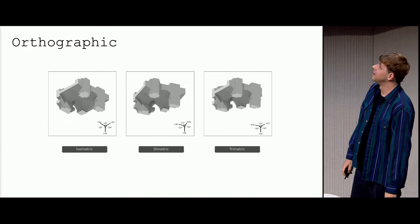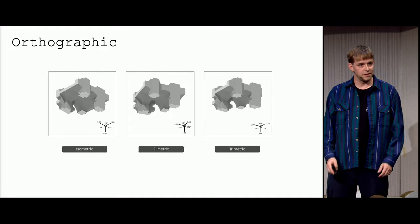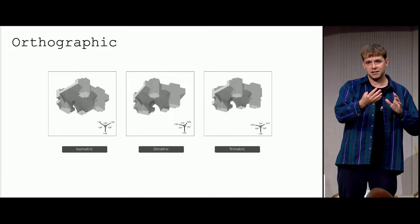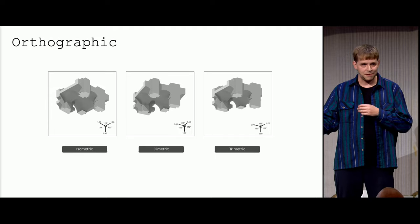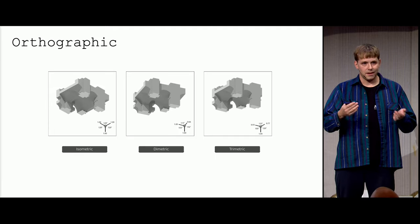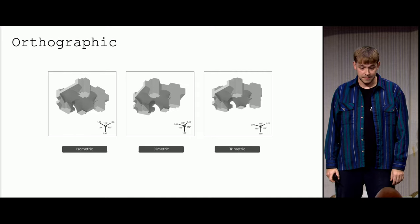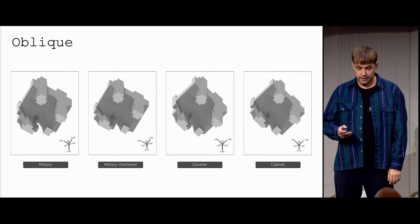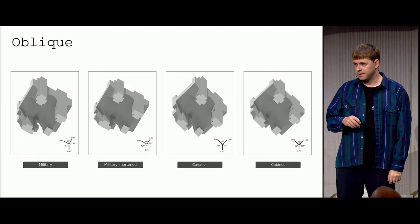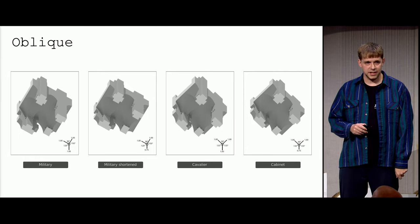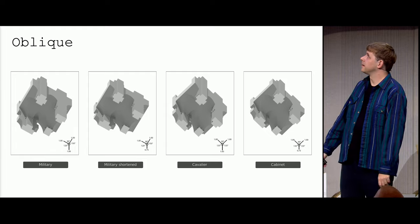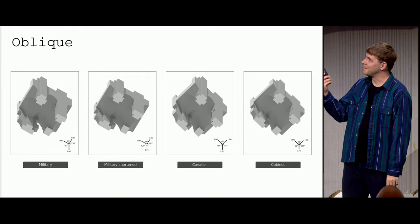We can see them in comparison. These are the three orthographic projections with an object we already know, and we can actually understand why orthographic wasn't used. The oblique was much better to understand the plan of this fragment. And there we see the four oblique projections with the Palatine object.